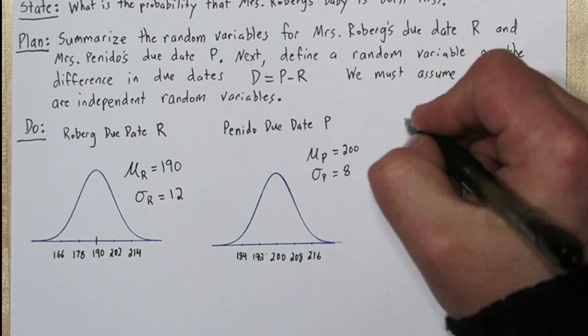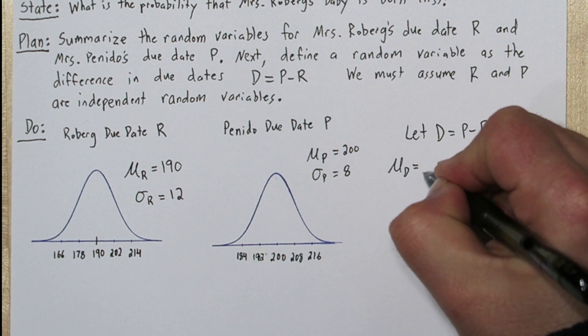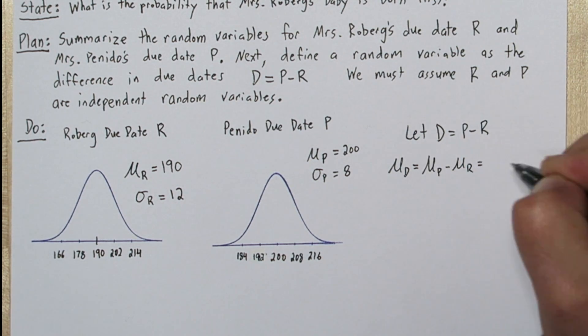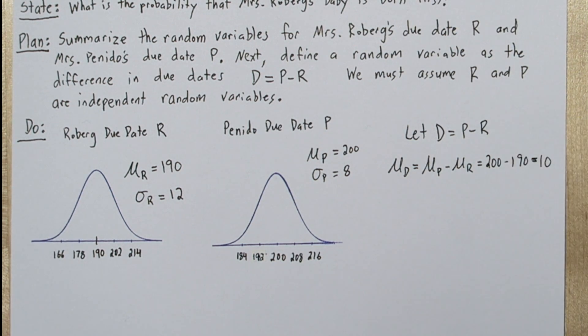So the difference in due dates is P minus R. And the mean difference is going to be the mean of the Paneto due date minus the mean of the Roeberg due date, 200 minus 190. So that's 10.